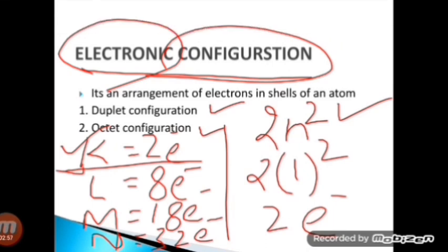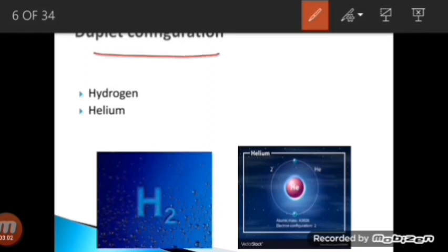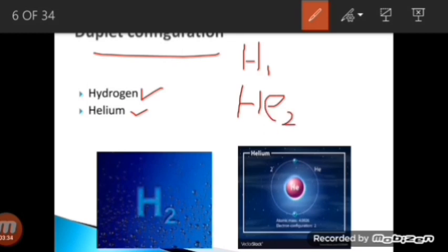Duplet configuration: 'duplet' means two, 'configuration' means arrangement of electrons. Always remember there are only two electrons present in the valence shell of all atoms which possess duplet configuration. There are only two elements in nature which have duplet configuration: hydrogen and helium. Hydrogen has atomic number one, and helium has atomic number two. Atomic number is also called proton number, and it depicts the position of an element in the periodic table.